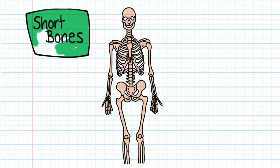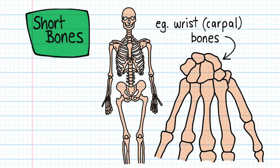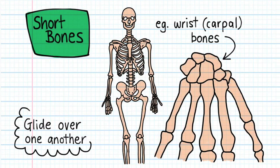Short bones are small and boxy and include the bones of the wrist and ankles. Short bones glide over one another which is why our wrists and ankles can bend in multiple directions.